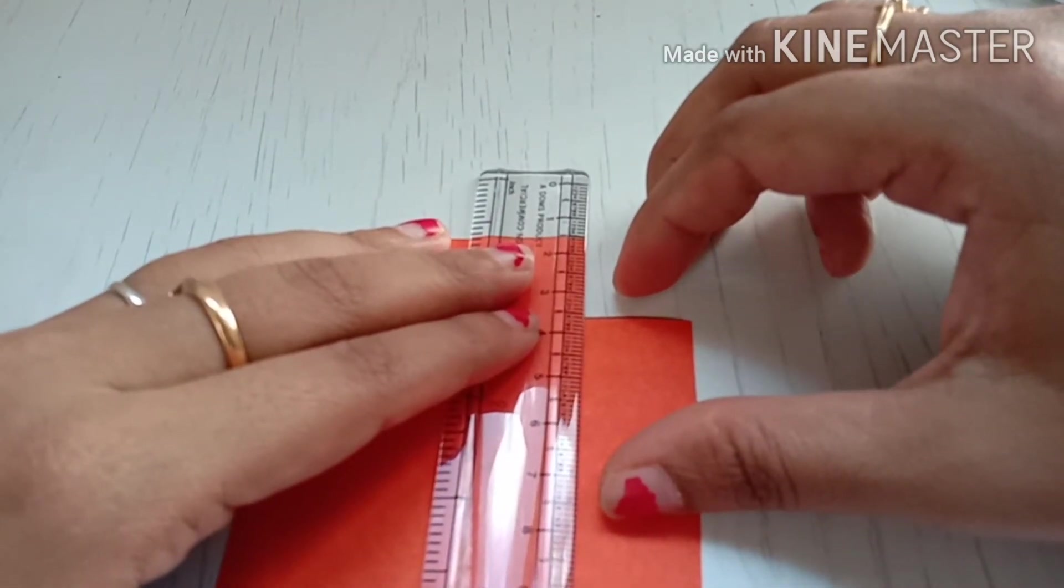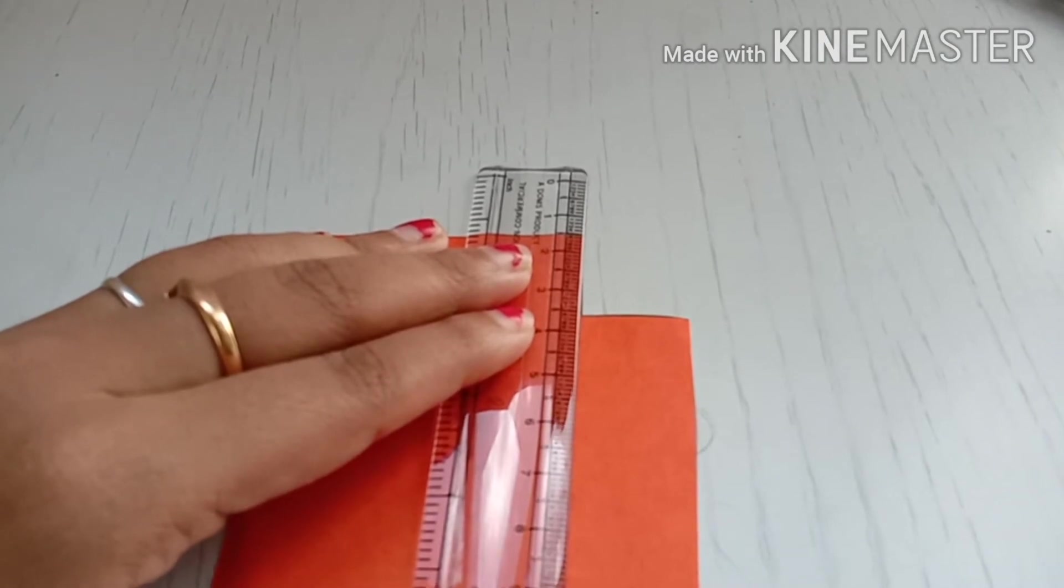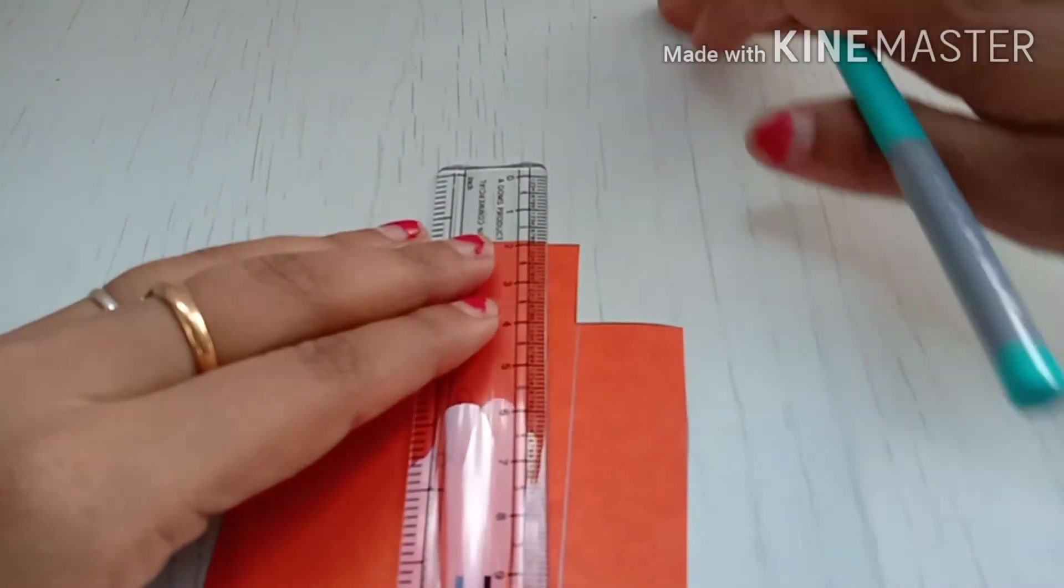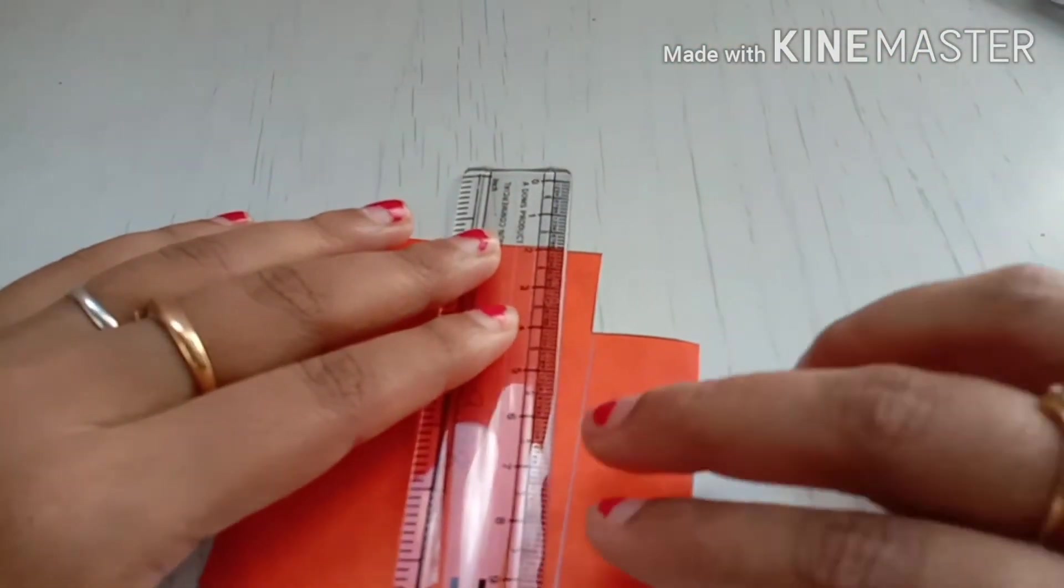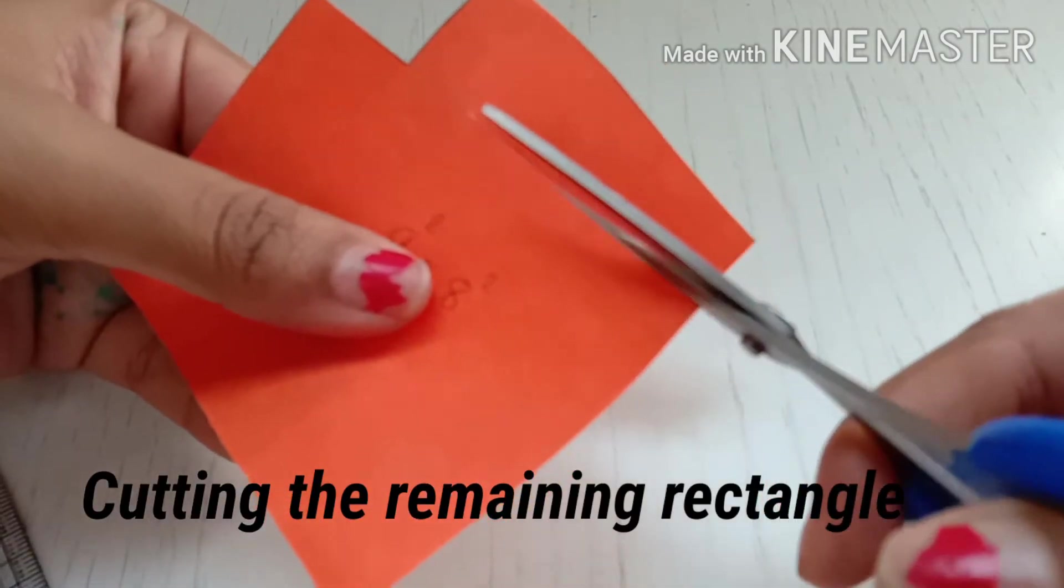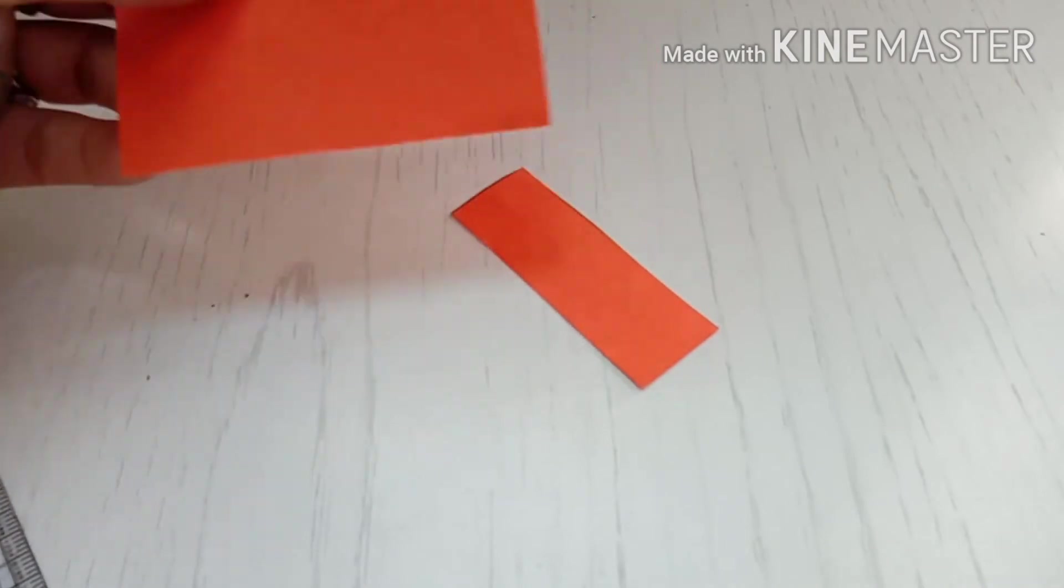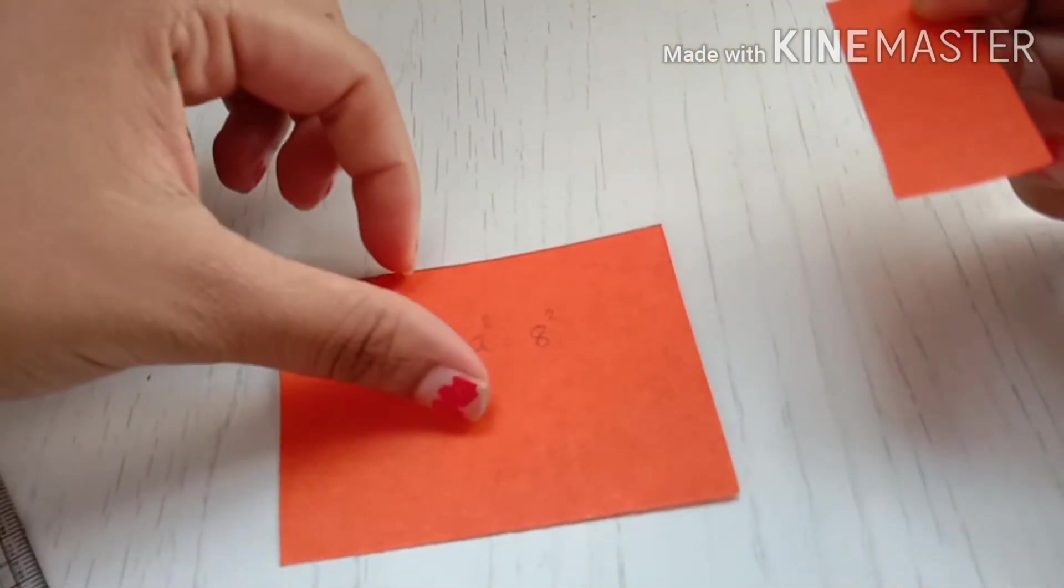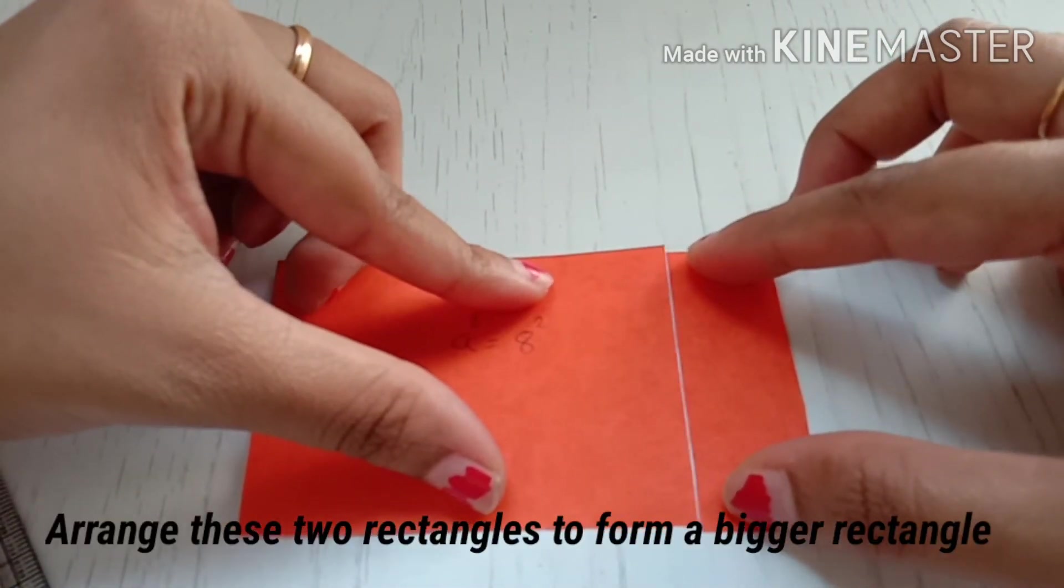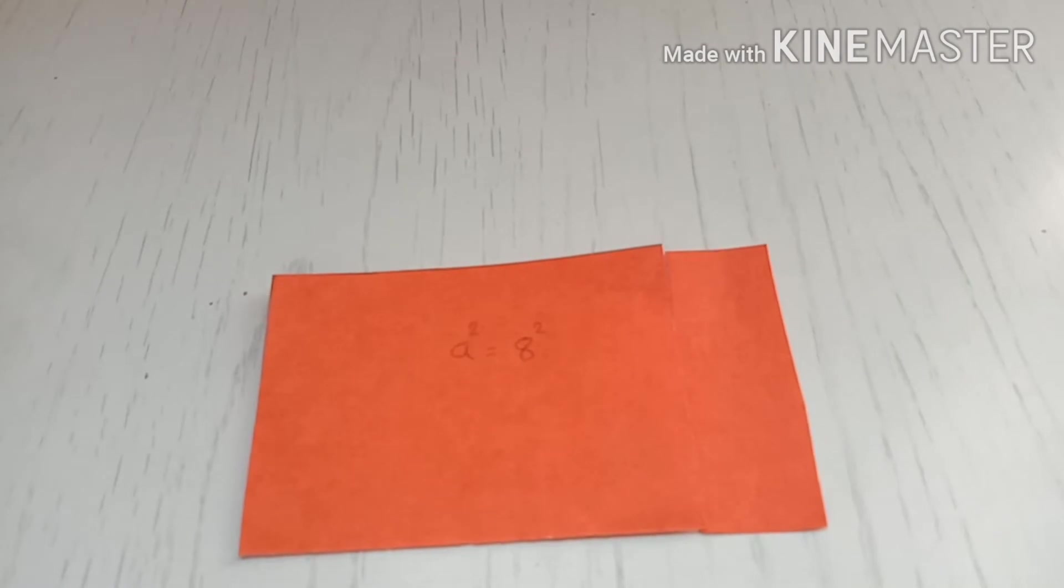After cutting the b square, I'm left with a rectangle. I am going to cut that rectangle now. Now I am going to arrange these two rectangles to make a bigger rectangle. Let us paste this on a sheet.